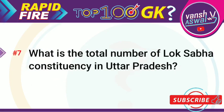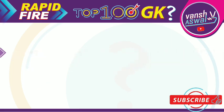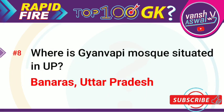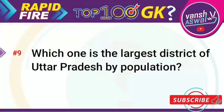Question 7: What is the total number of Lok Sabha constituencies in Uttar Pradesh? Answer is 80. Question 8: Where is Gyanvapi Mosque situated in UP? Answer is Banaras, Uttar Pradesh. Question 9: Which is the largest district of Uttar Pradesh by population? Answer is Agra.